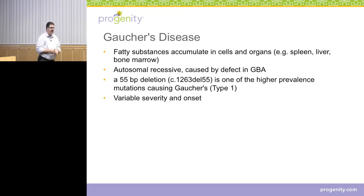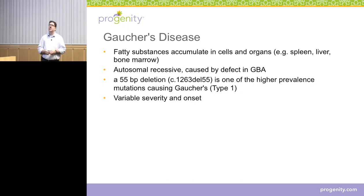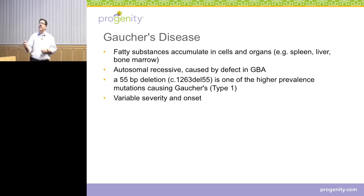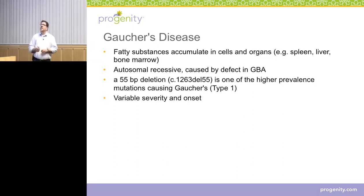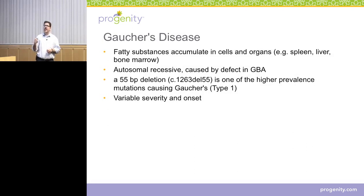Now I'm going to go through a list of some of the problems or challenges that come up when you're developing one of these assays. When I start with each challenge, I'm going to start with a brief slide about the disease, to keep in focus that there's a medical context to this work. A lot of the problems are very specific, a lot of the solutions are very practical and ad hoc, and I want to be clear that the reason we do this is so that we can address a medical need. Gaucher's disease is a disease in which fatty substances accumulate in cells and organs. It's autosomal recessive, caused by a defect in the GBA gene.